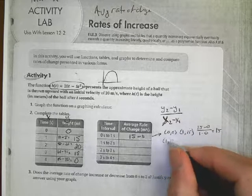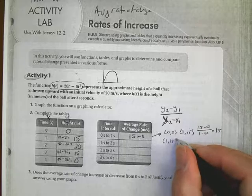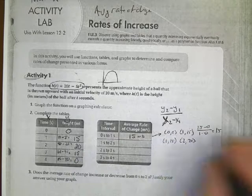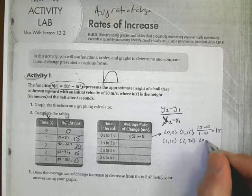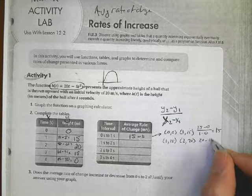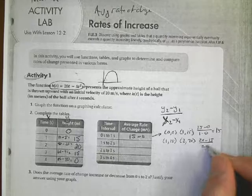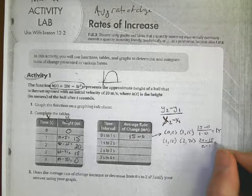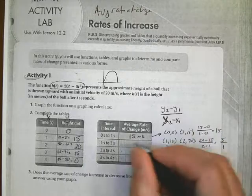So now in terms of the rate of change, the rate of change is going to be your y2 - y1 value over your x2 - x1 value. And so since now we have x and y values, we would plug those in to determine what would be our average rate of change.